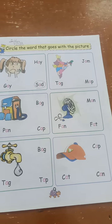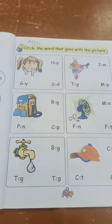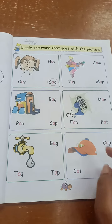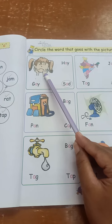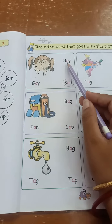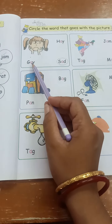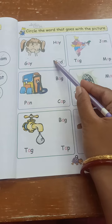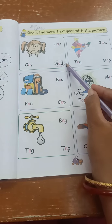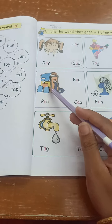What is written over here? C-I-R-C-L-E — Circle. T-H-E — The. W-O-R-D — Word. Circle the word. You need to put a circle. T-H-A-T — That. G-O-E-S — Goes. W-I-T-H — With. T-H-E — The. P-I-C-T-U-R-E — Picture. So circle the word that goes with the picture. As you can see, pictures are given over here. These are the different pictures given and also some words are written. We need to look at the picture and circle the correct name of the picture.